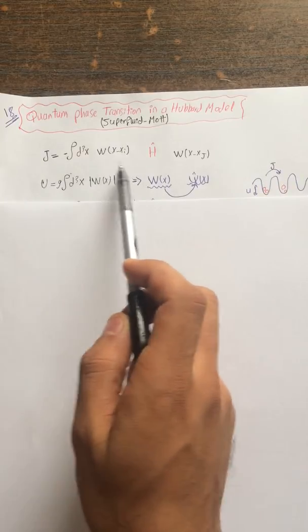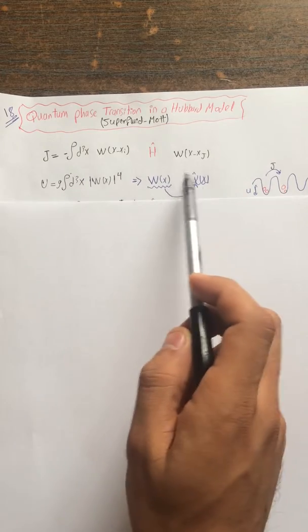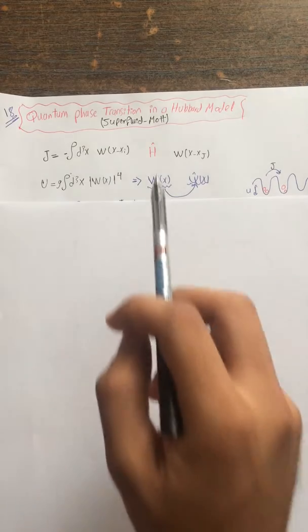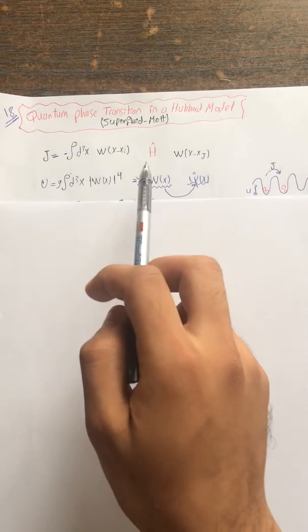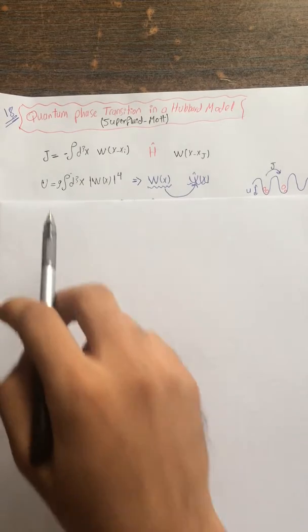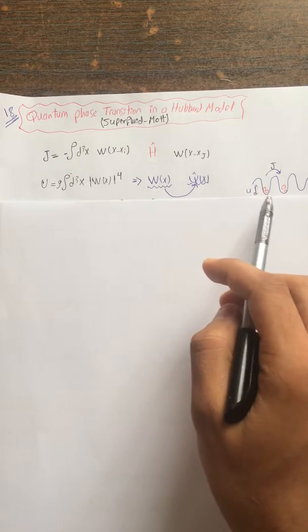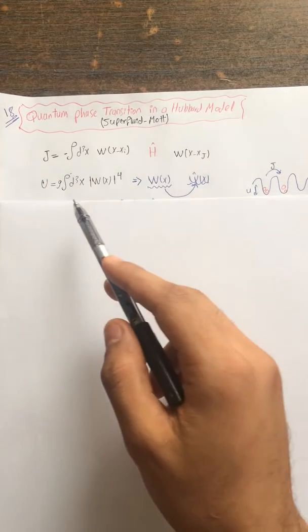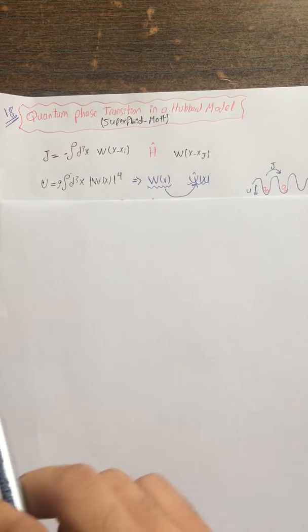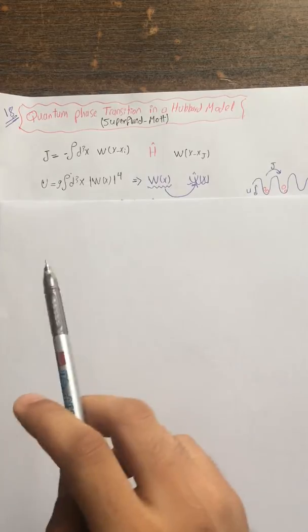J is the hopping term from one site i to another site j, and in between you have the matrix element. The Hamiltonian for this matrix element is nothing else than kinetic energy and potential energy for the system. For the on-site interaction U, if you have two particles, their Wannier functions squared give the interaction term. J is the coupling constant proportional to the scattering length a.